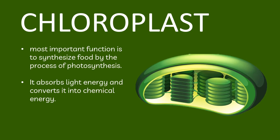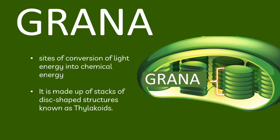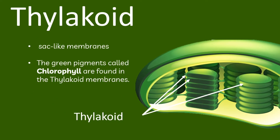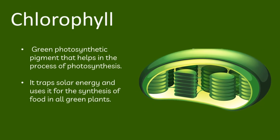There are two unique parts present inside the chloroplasts known as the grana and the stroma. The grana are the sites of conversion of light energy into chemical energy. They are made up of stacks of disc-shaped structures known as thylakoids. Thylakoid membranes contain photosystems, which are composed of groups of molecules that include chlorophyll — a green pigment that traps solar energy and uses it for the synthesis of food in all green plants.